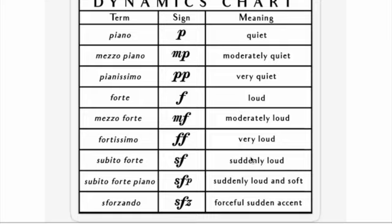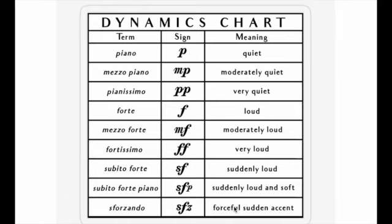There's another chart that walks through this a bit more nicely — these three markings at the bottom that you may come across. Again, very rarely will the terms actually be written out; more often you're going to see these symbols. Here's what they mean: subito means suddenly. Subito forte means suddenly very loud. Subito forte piano means you're going to be suddenly loud and then very quickly change to soft. And sforzando is similarly suddenly loud but with an accent. We'll talk more about articulations in the next video.